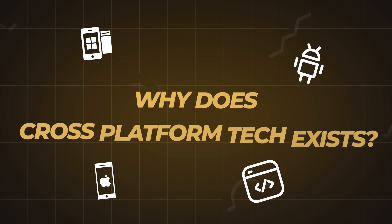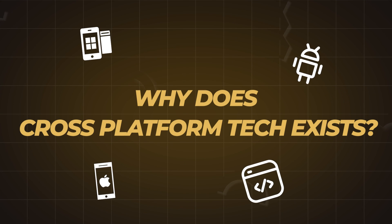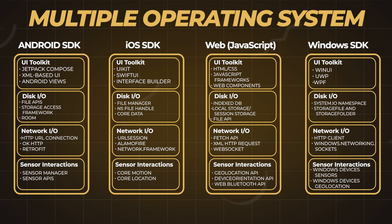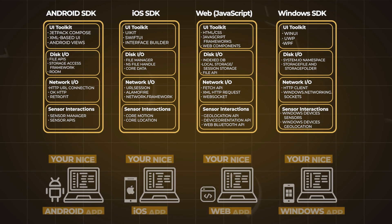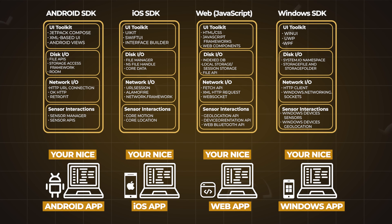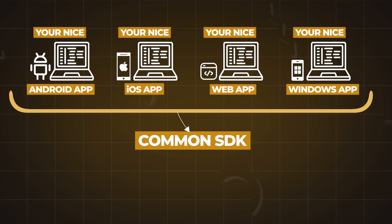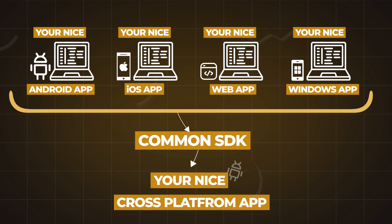So why does Flutter or any cross-platform technology exist? The short version is you have multiple operating systems. They provide different UI toolkits to paint pixels on the screen, different ways of doing network I/O, disk I/O, and interacting with sensors. One way is for you as an app developer to build an app for each of these operating systems, or you can use a cross-platform technology which gives you just one SDK in one language and abstracts out the SDKs for all these operating systems. So it's kind of a no-brainer.